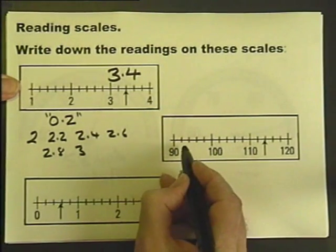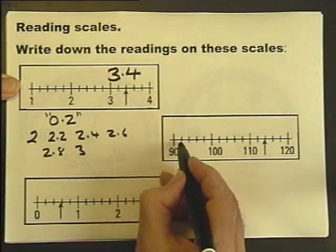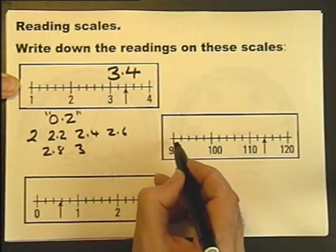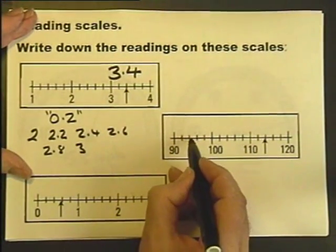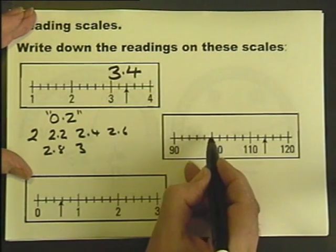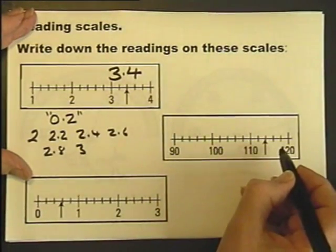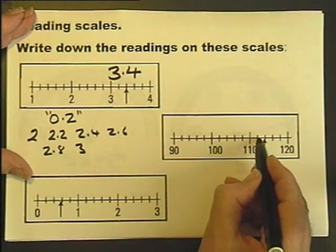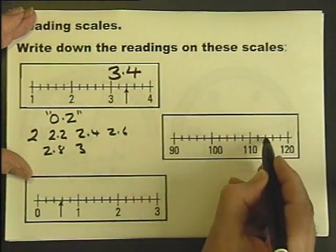What's this one going up in? 90, 91, 92, 93, 94, 95? No. 90, 92, 94, 96, 98, 100. It's going up in 2's. So this is 110, 112, 114.